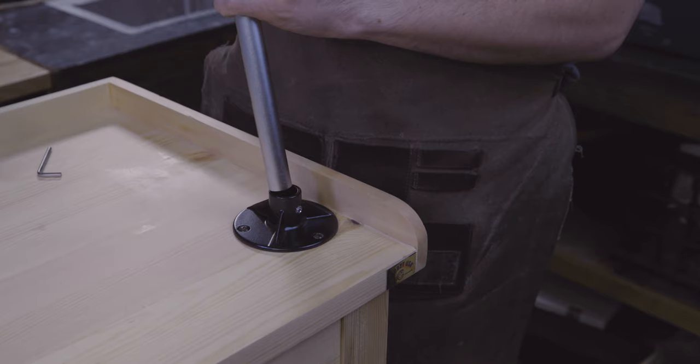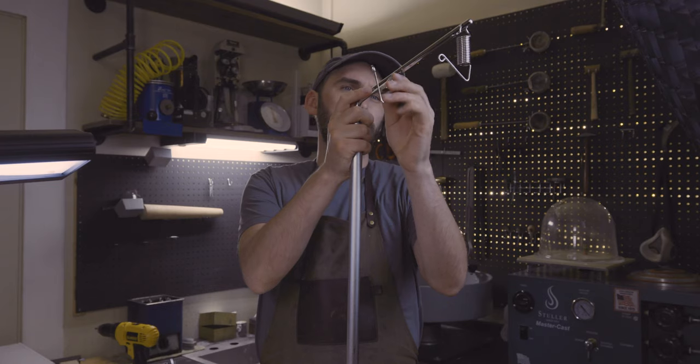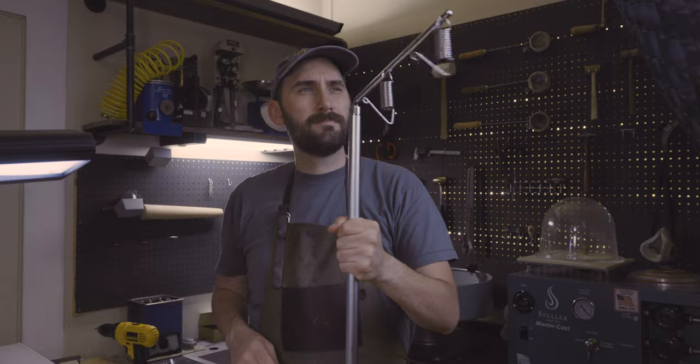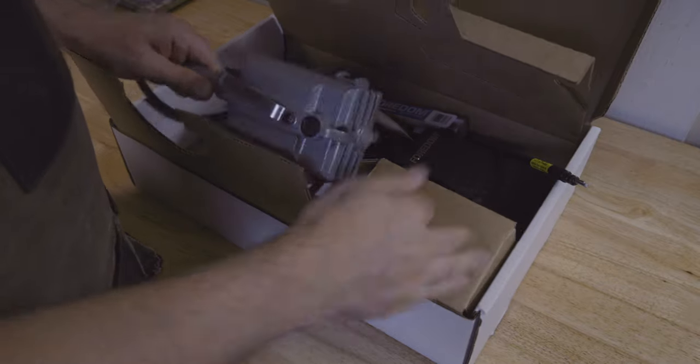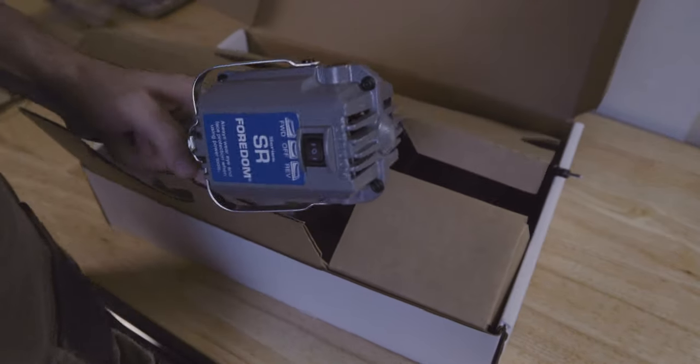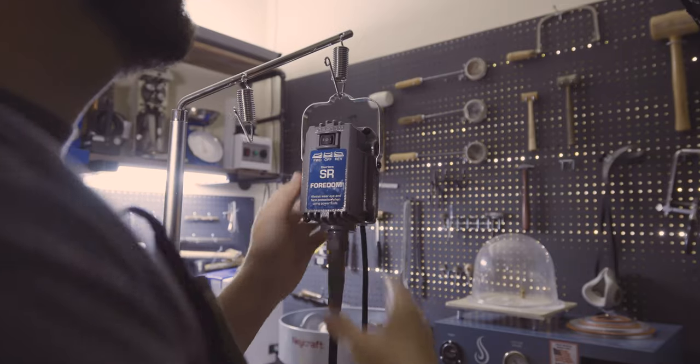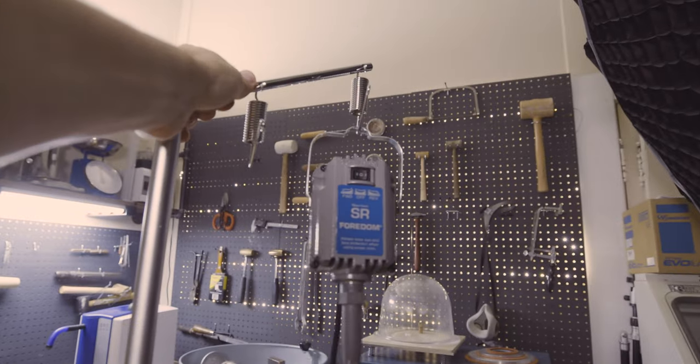We'll need to attach a hanger for the motor and flex shaft. Two hooks is preferable so we can add to it later. There's an excellent starter kit made by Fordham. It includes a motor, flex shaft, and a quick change handpiece. Oh, did I mention the hanger swings.